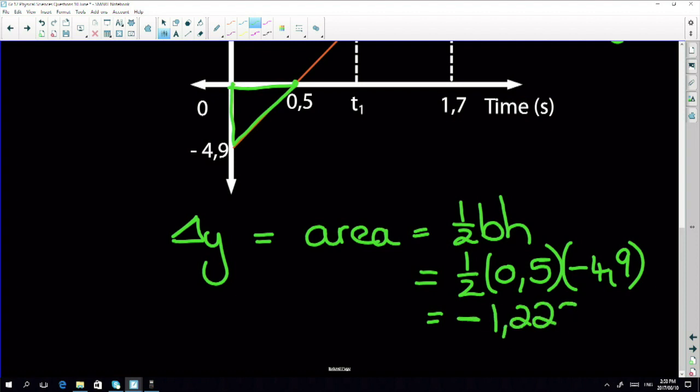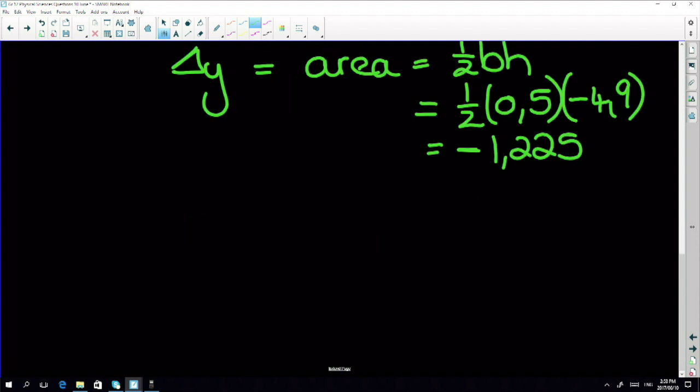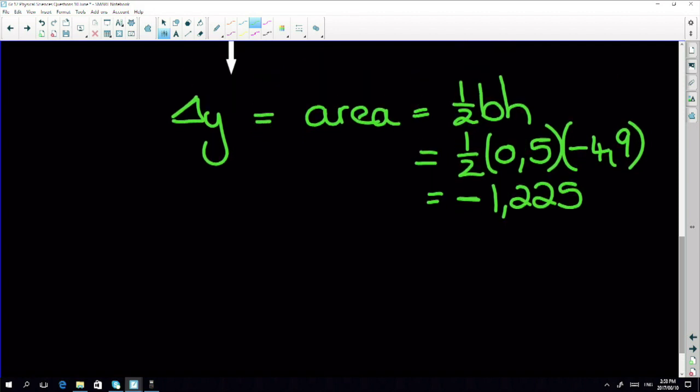It's negative, that makes sense because up was the negative direction, down was my positive direction. That means it's 1.225 meters above the balcony.